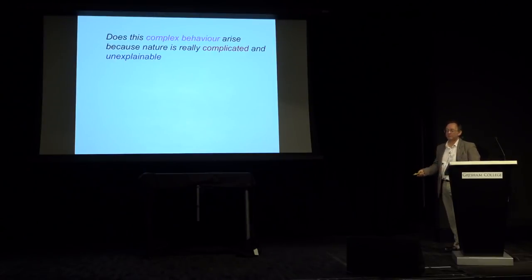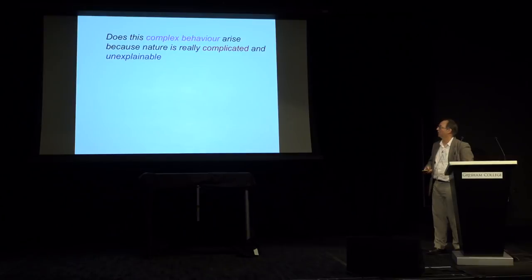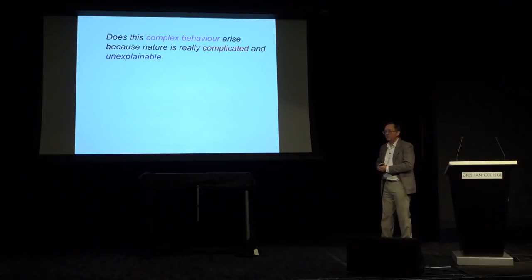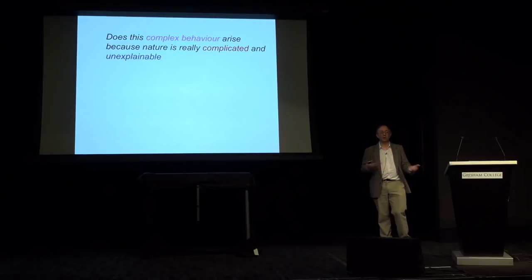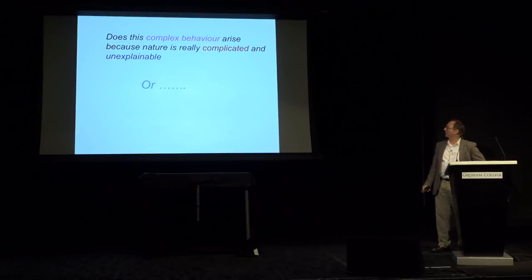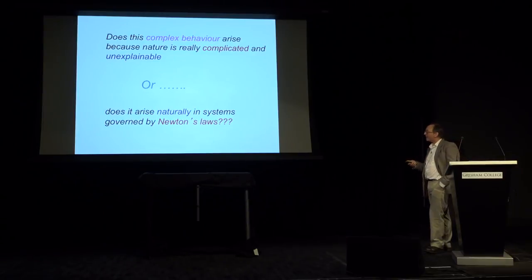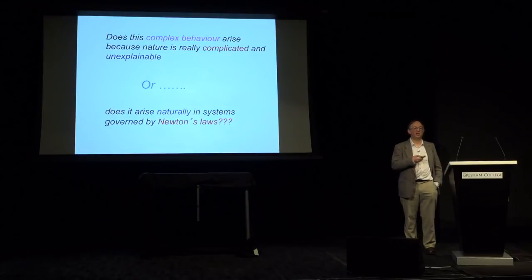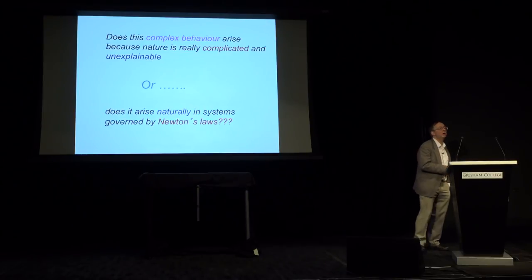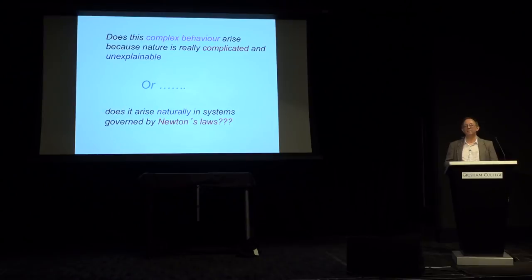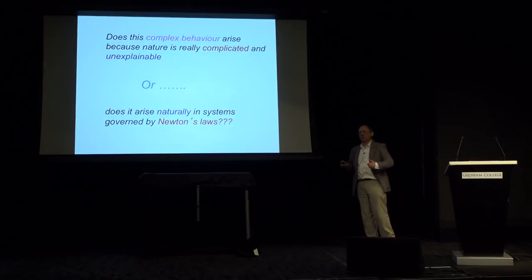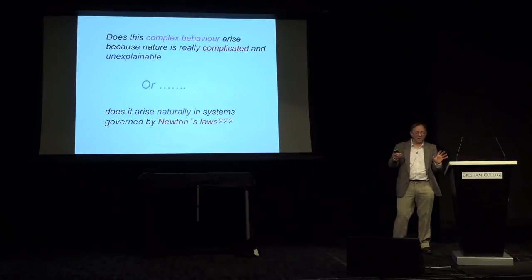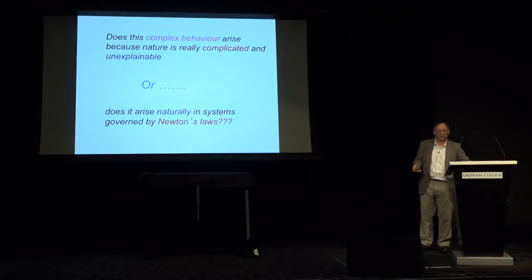So here's the question, and it's an incredibly deep question. It's a sort of philosophical question. It's a mathematical question. It's possibly even a theological question. Does the complex and unpredictable behavior that we see in nature arise, because nature just is like that, so forget it. We can't do any science. Or does unpredictability arise naturally in systems where Newton's law is acting? So this is the fundamental question which I will address today. This is a very deep question. It's also linked with a related question, which is, does predictability and unpredictability sort of coexist in the way that we try to understand the universe?